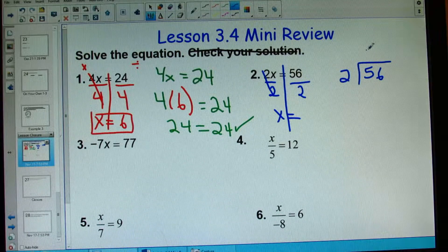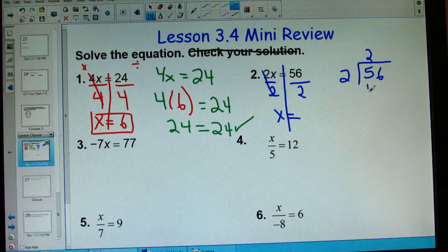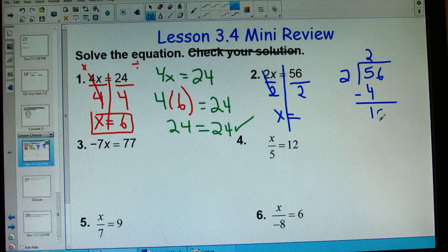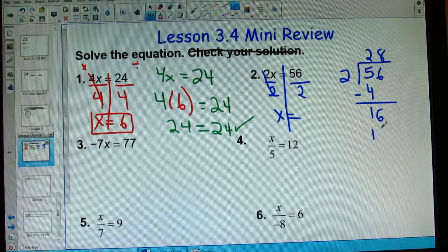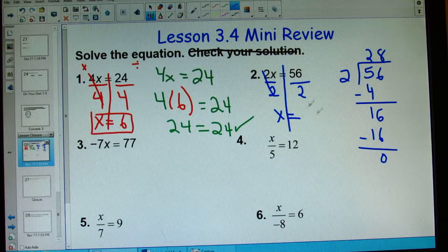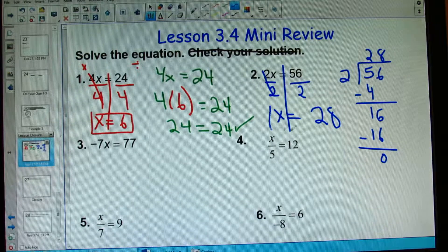2 divided by 5 goes in 2 times because 2 times 2 is 4. Subtract. Bring down. 2 goes into 16 exactly 8 times. So my final answer is x is 28.